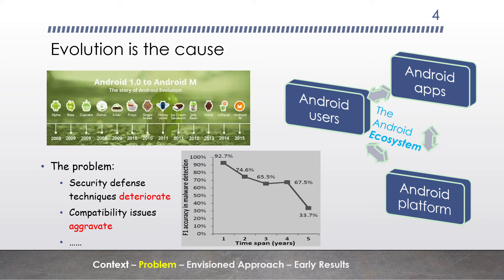For example, for malware detection, learning-based approaches use features according to the characteristics of one version of the ecosystem. However, this kind of learning-based approach may not work effectively on apps developed on top of a different version of the ecosystem. This figure shows one of the state-of-the-art malware detectors deteriorating rapidly in detection accuracy when applied one to five years after it is trained. The compatibility issues also arise when developers are not aware of changes in the ecosystem, or simply because developers are not in sync with platform changes when they develop apps.